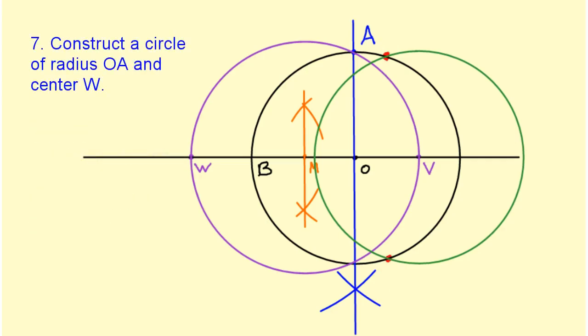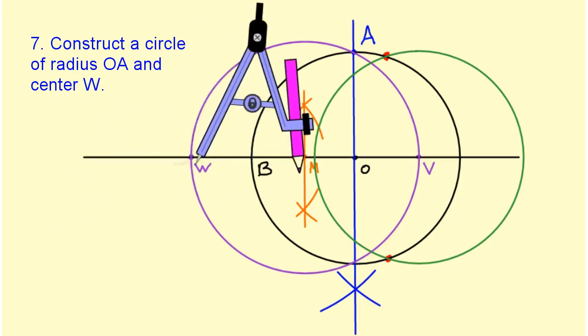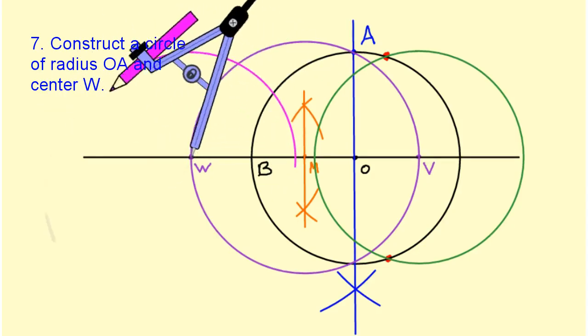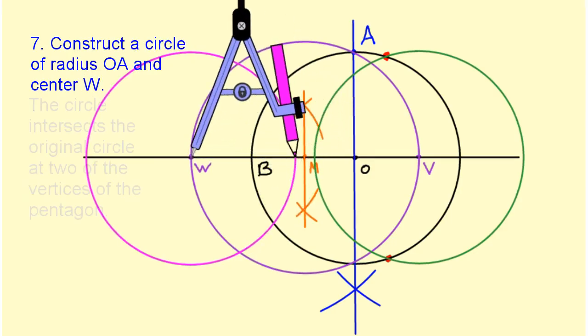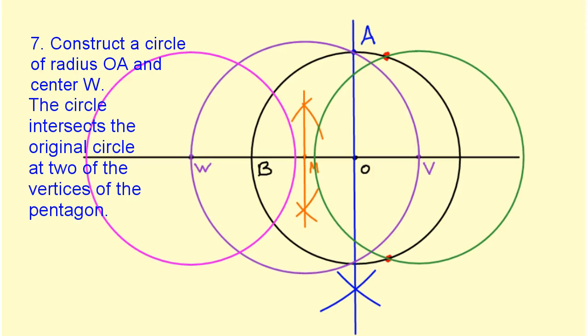Now I need to draw another circle with radius OA, but this time it's going to be centered at W. Since my compass is already open to the length OA, I just put the point at W and draw my circle. This circle also intersects the original circle at two of the vertices of the pentagon.